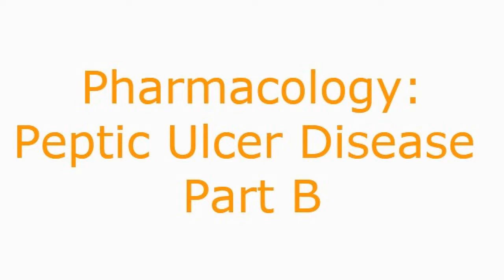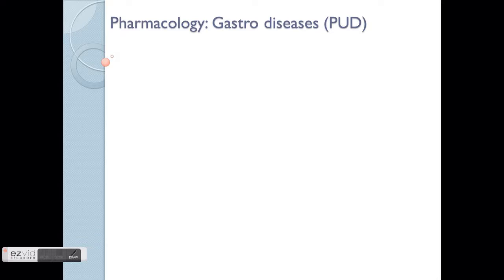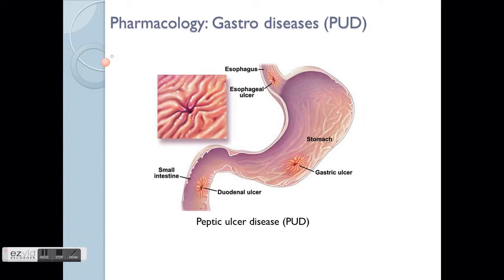Welcome to Pharmacology! In this Part B, we'll talk about more on the drugs used for PUD. So here we only focus on two classes of drugs, which is the H2 antagonist and also the proton pump inhibitor. Just a reminder, this is what peptic ulcer disease is all about.